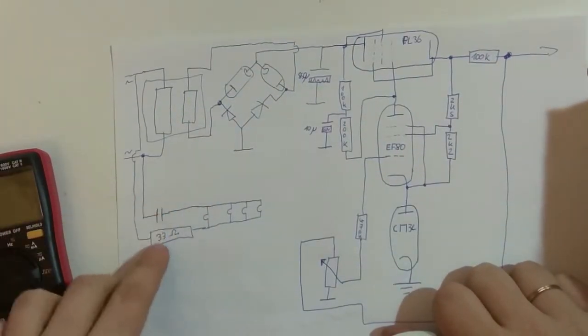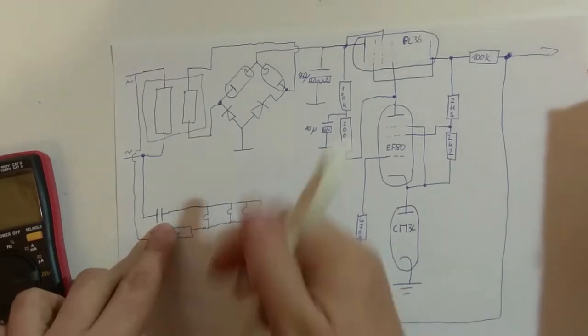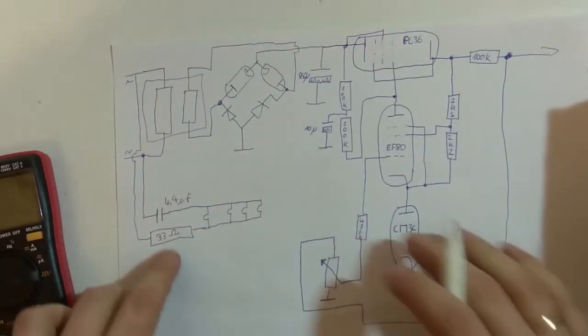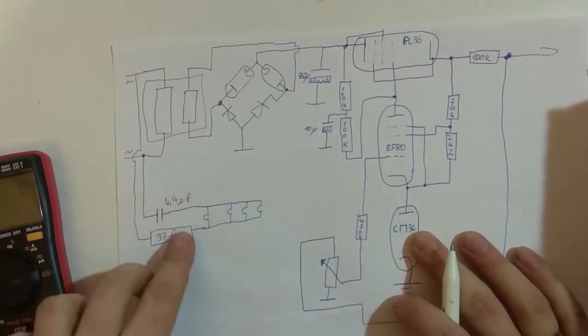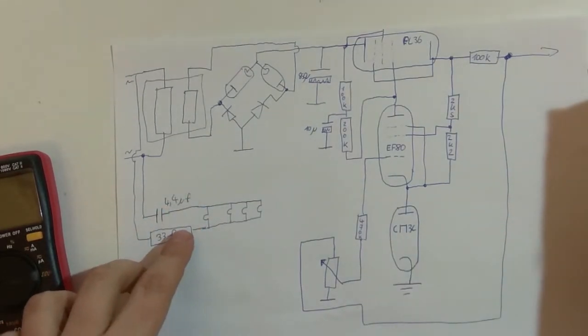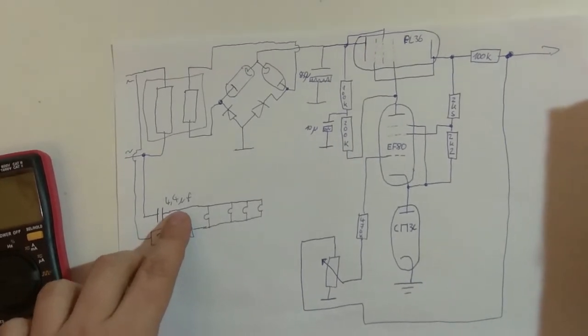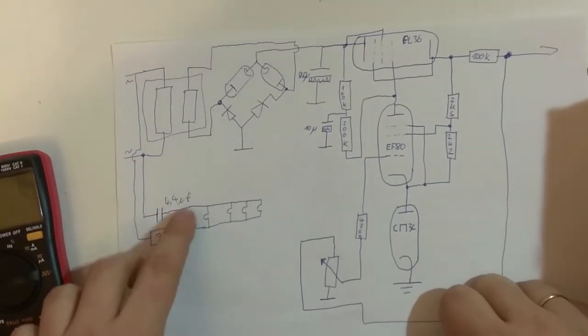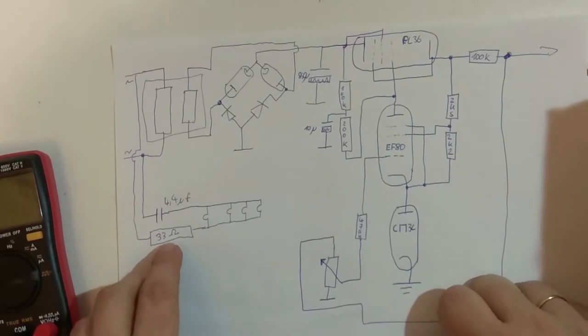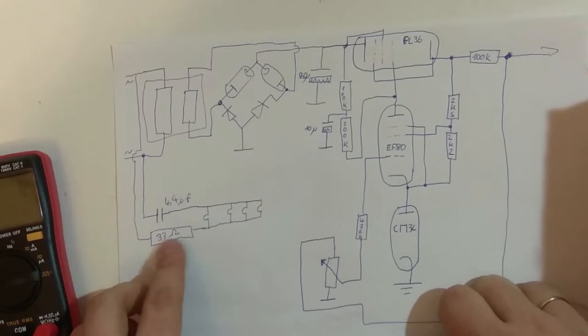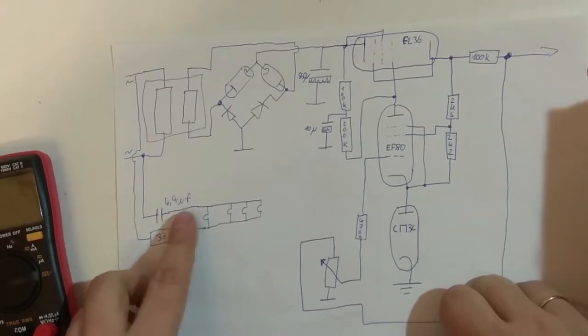There we go. This is 33 ohms by the way. So first of all we got our transformer over here, and also the dropper cap which is 4.4 microfarads. There's actually online calculators for this so you can calculate it out.